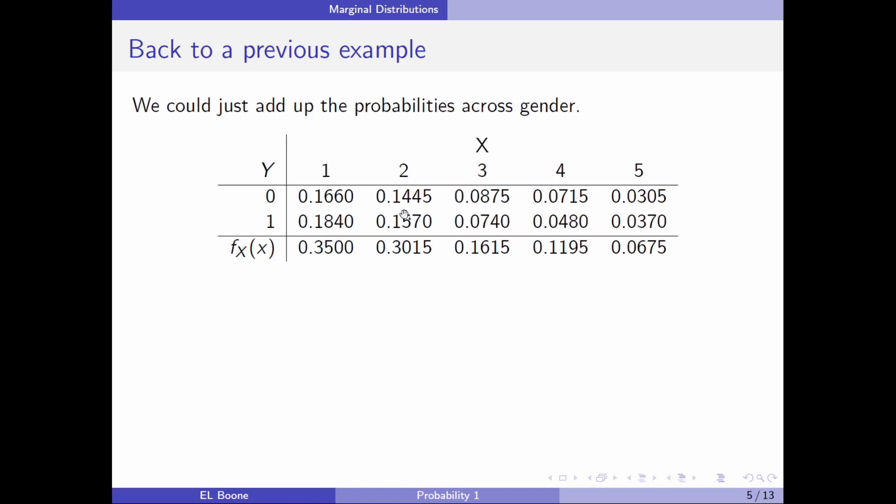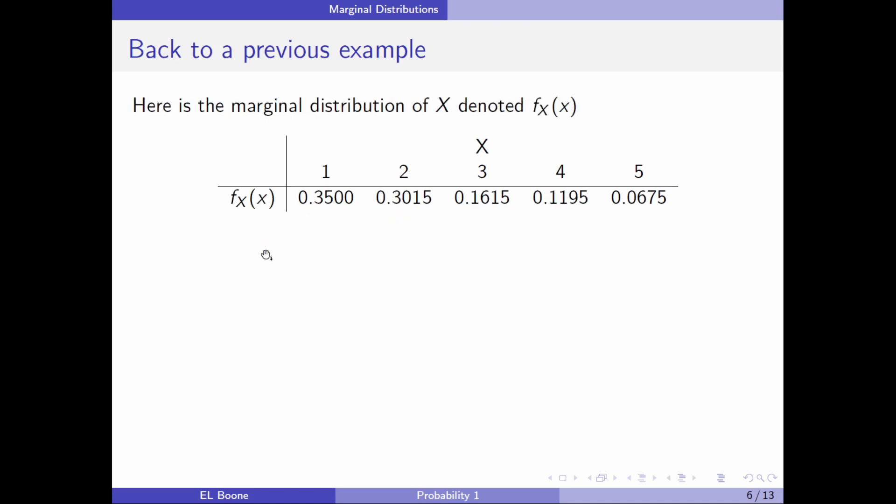Well, this is pretty easy to do. Basically, you just add up across the genders for each of the given probabilities. So here's 0.1660 plus 0.1840 is 0.3500. And you do this all the way across here and get each of the values. And basically what you're doing is you're accumulating all the probability that's associated with that value of x, regardless of what value of y was associated with it.